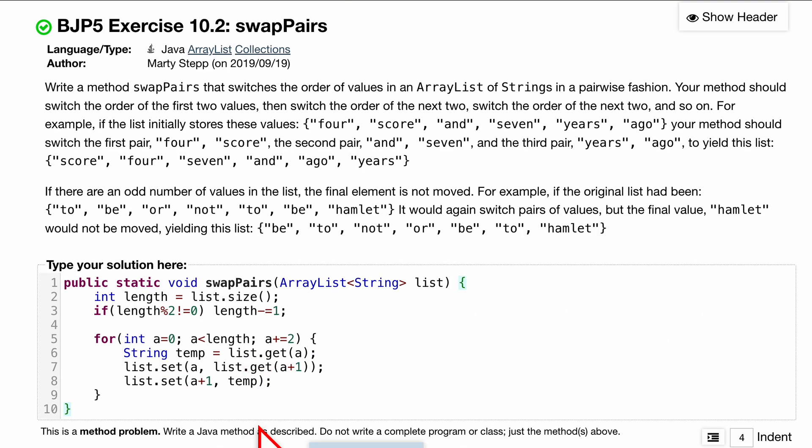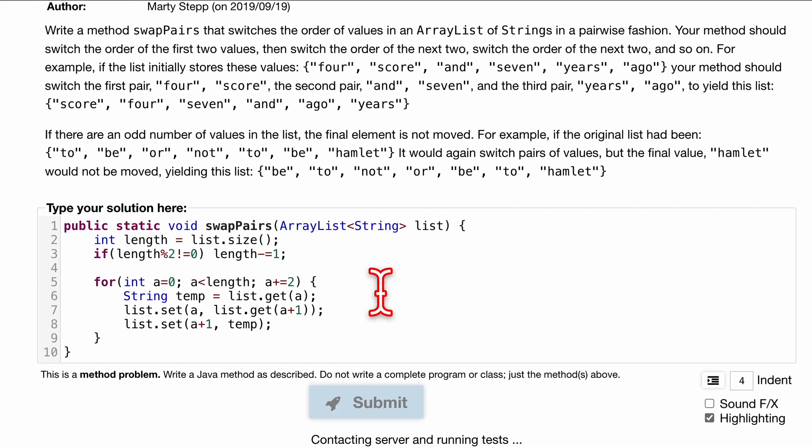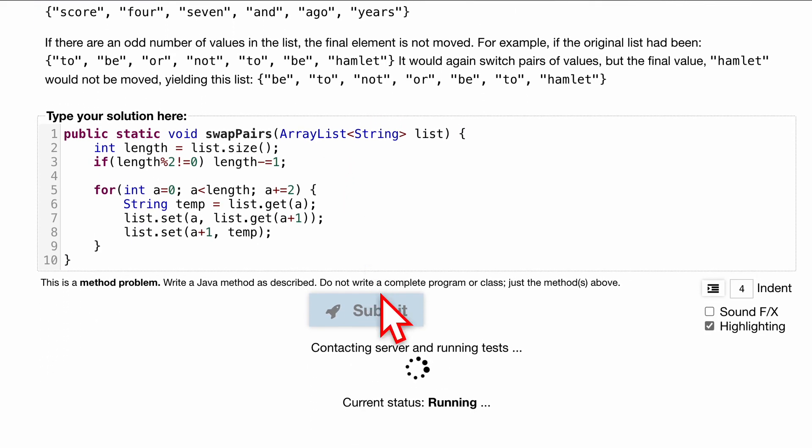And that's pretty much it for our swapping. If we close our for loop, we can close this function. We can submit it and we should pass the tests.